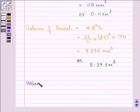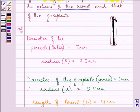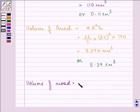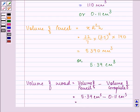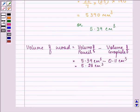Now we can find the volume of the wood. It will be equal to the volume of the pencil minus the volume of the graphite. That is 5.39 cm³ minus 0.11 cm³, which equals 5.28 cm³.